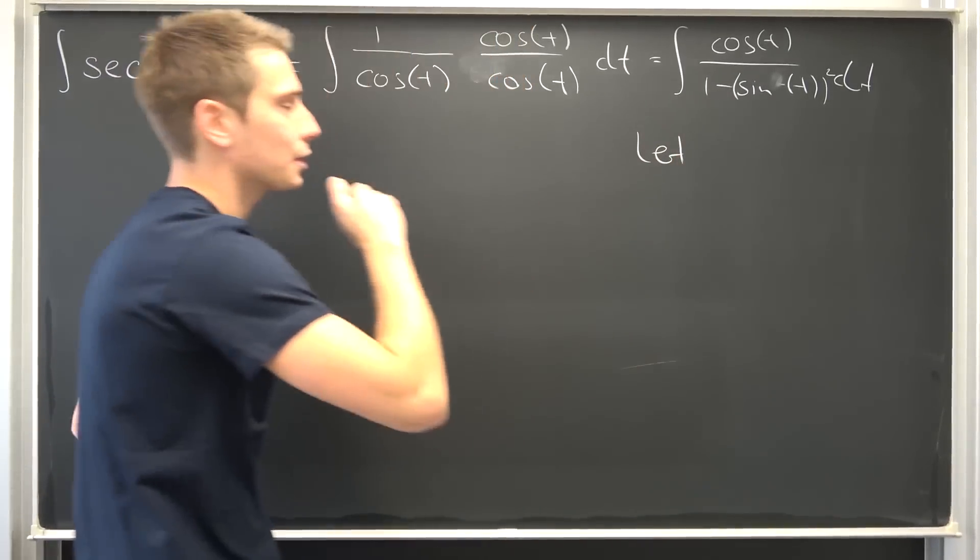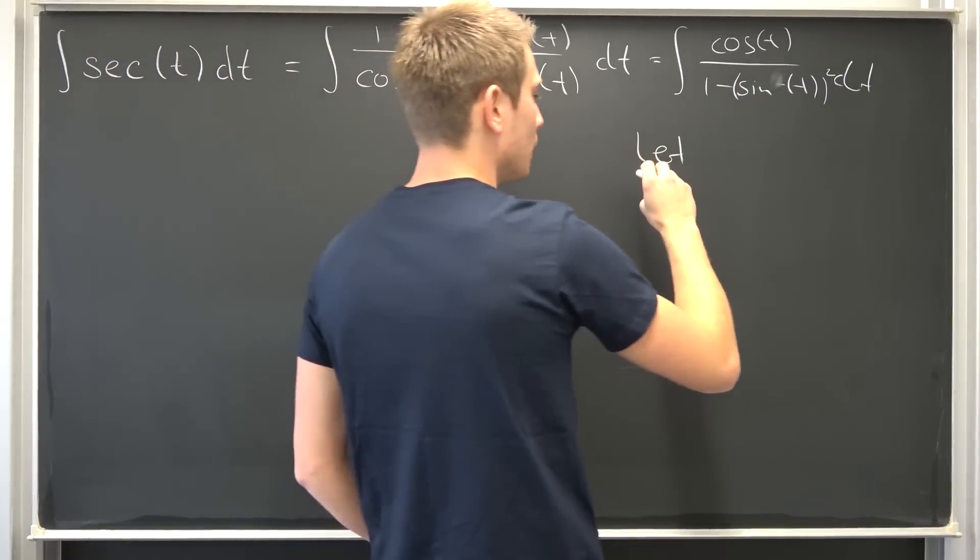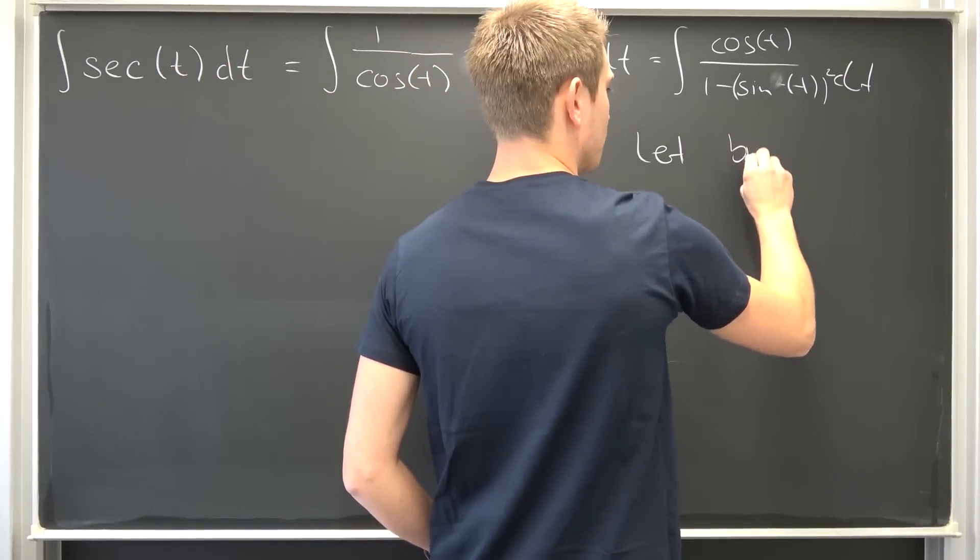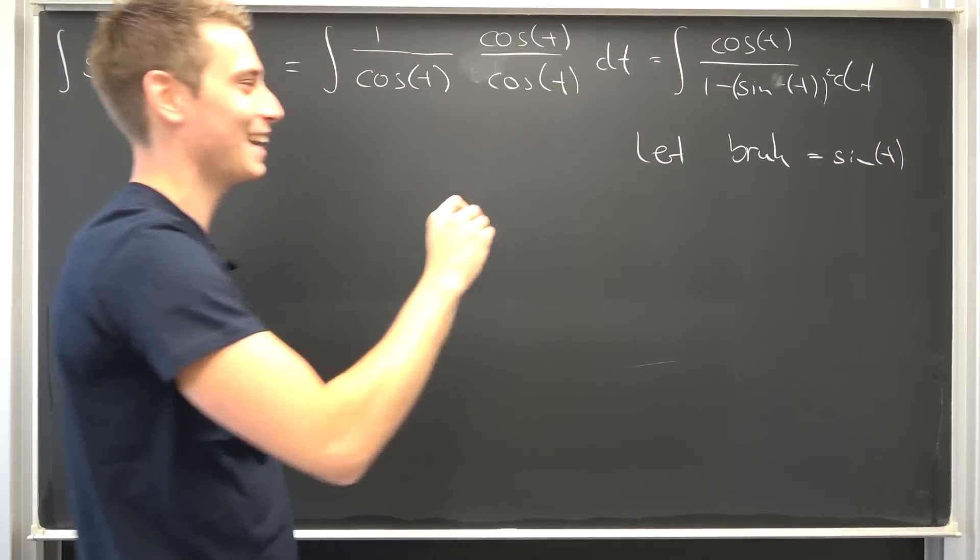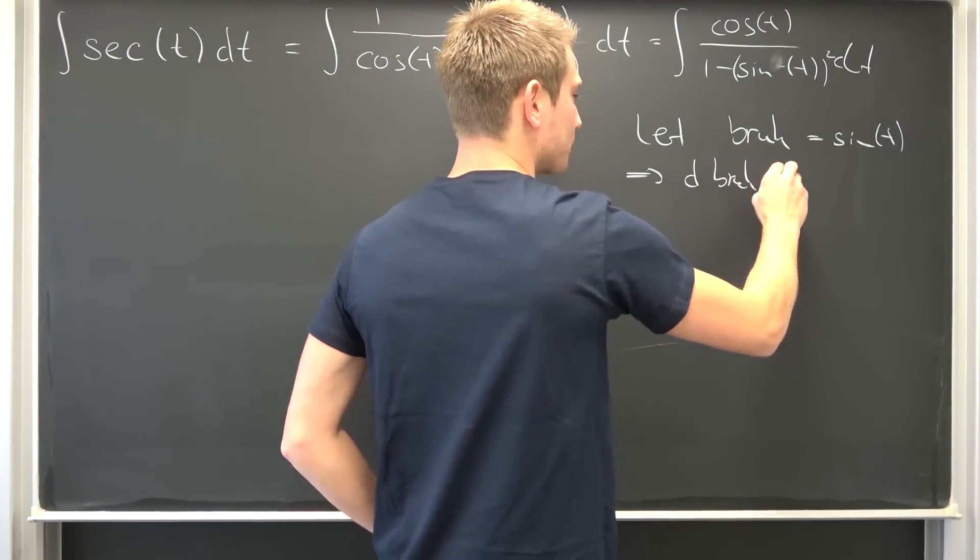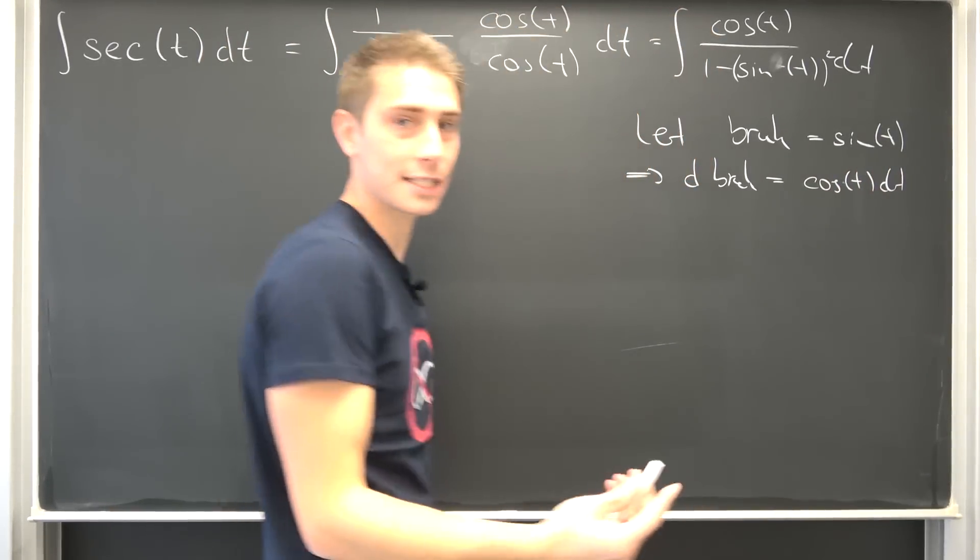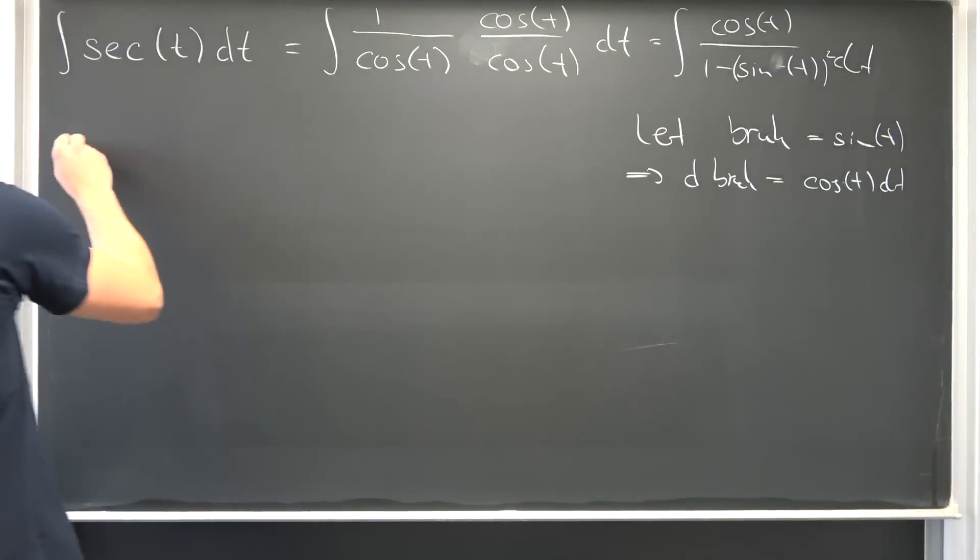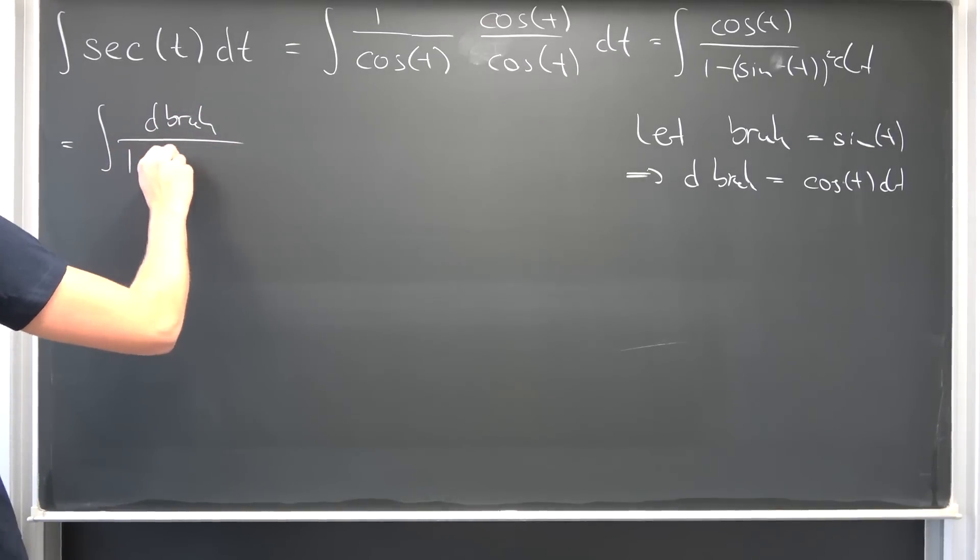So let, what nice variable could we possibly use? We are going to use bruh. Okay, bruh is thus equal to the sine of t. And we are going to say that d bruh is thus equal to the cosine of t dt. And it does make perfect sense because now we have d bruh up here. We are going to have d bruh over 1 minus bruh squared.